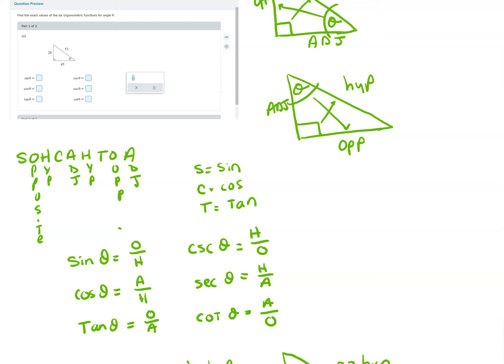So the sine of theta is opposite divided by hypotenuse. These are the lengths of the sides. Cosine of theta is adjacent divided by hypotenuse. Tangent of theta is opposite over adjacent. So you can pull off the sine, cosine, and tangent from this word here.